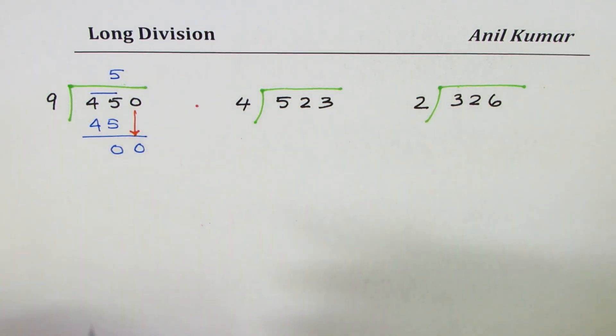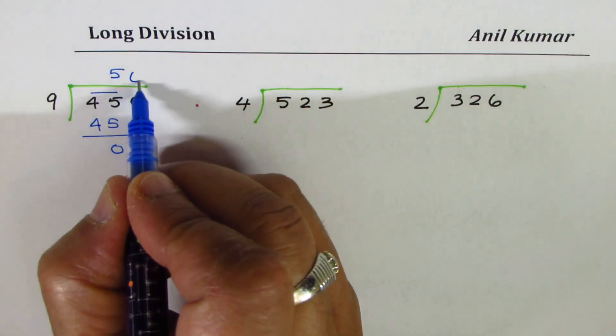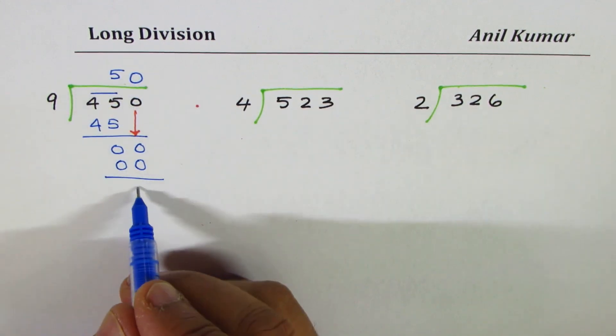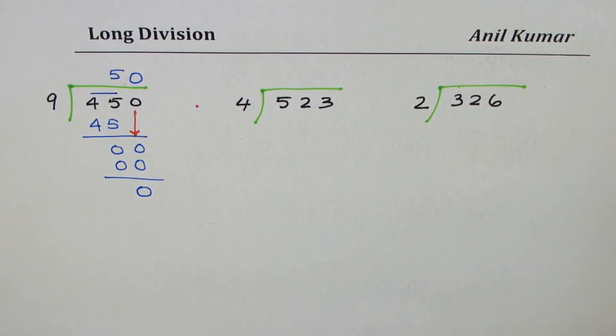You get 0, 0. What should you do now? 9 times 0 is 0. Don't hesitate to do this step. 9 times 0 is 0, and now the remainder is 0.